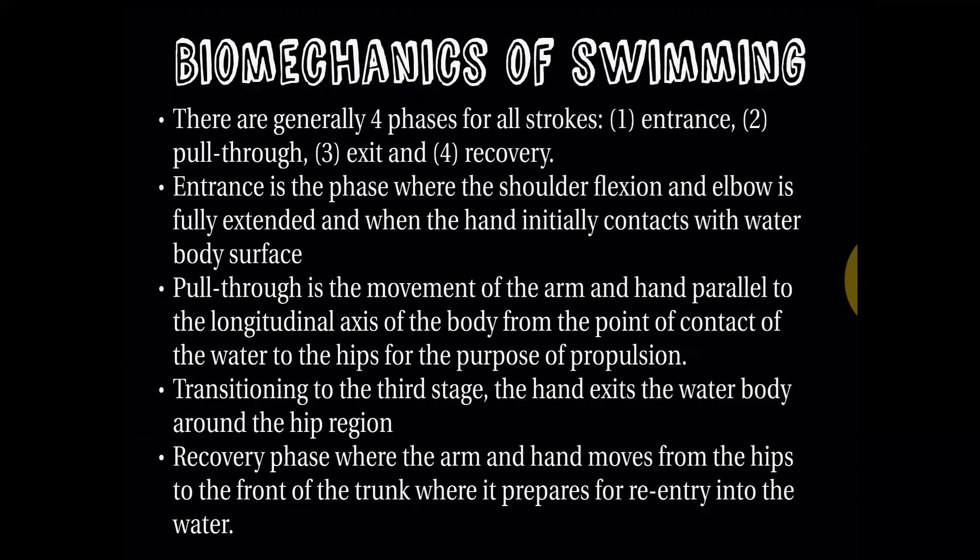There are generally four phases for all strokes. First, the entrance: shoulder flexion with elbow fully extended when the hand initially contacts the water surface. Second, the pull through: the arm and hand move parallel to the longitudinal axis of the body from the point of water contact to the hips for propulsion. Third, the exit: the hand exits the water around the hip region. Fourth, the recovery: the arm and hand move from the hip to the front of the trunk in preparation for re-entry into the water.